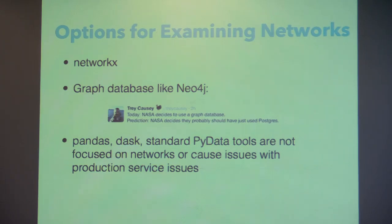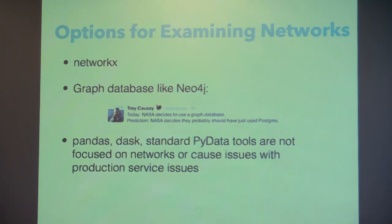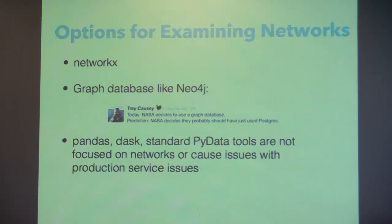Graph databases like Neo4j can be really good. There's the idea of choosing boring tools: if you have a workflow that isn't trying to use the latest and greatest, you're exposing yourself to less risk. If you can work with the tools you know — your standard PyData stack — that seems like a really good thing. Pandas has Dask for out-of-memory workloads, but when it comes to providing Flask microservices to expose the insight we have, they suffer from issues, so we ended up not going with them either.